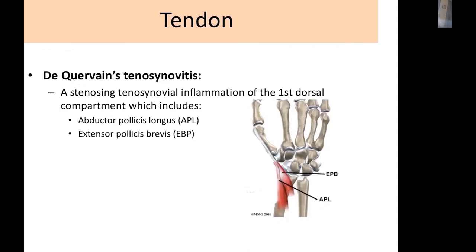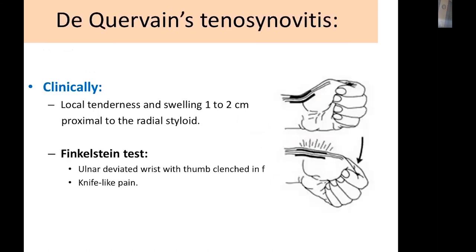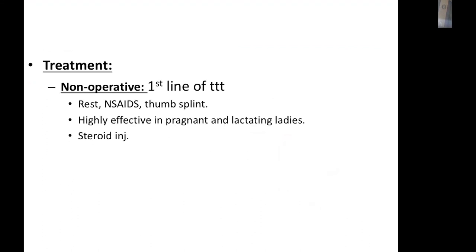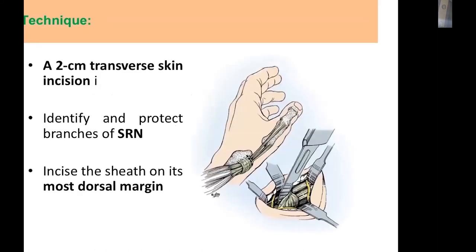Tendon pathology can cause radial-side wrist pain. De Quervain's tenosynovitis is entrapment of the first dorsal compartment containing the abductor pollicis longus and extensor pollicis brevis. The patient has radial-side wrist pain and a positive Finkelstein test. Treatment ranges from splinting, injection, and NSAIDs to surgery for cases failing conservative treatment. Surgically, a 2 cm transverse incision is used, identifying the superficial radial nerve to avoid injury, and the compartment is opened from the dorsal margin to avoid postoperative volar subluxation.